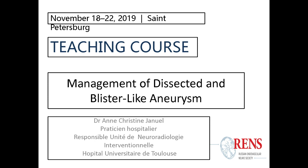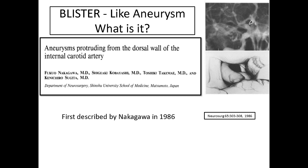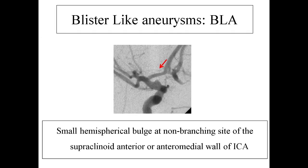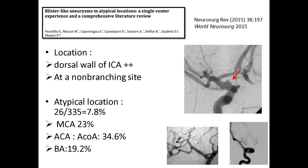We will move on with the management of dissected and blister-like aneurysms. We will first start with a blister-like aneurysm and then talk about a dissected aneurysm. A blister has first been described by Nakagawa in 1986 as an aneurysm protruding from the dorsal wall of the internal carotid artery. This is a small hemispherical bulge at a non-branching site of the supraclinoid anterior or anterior middle wall of the ICA, but it has been described also in atypical locations such as MCA, ACA, and basilar artery.